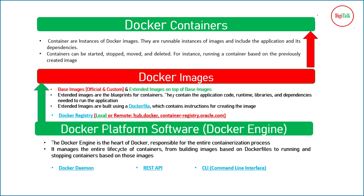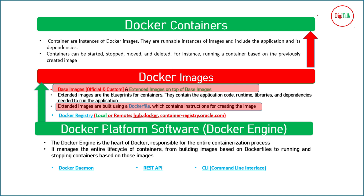Looking at a slide from the previous presentation, I want you to focus on two important terms. First, extended images are built using a Dockerfile — so when we create our own images we use a Dockerfile, which is the main configuration file where we define all configurations and customizations needed in our extended images. Second, base images are official and custom images that extended images are built on top of.